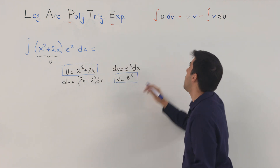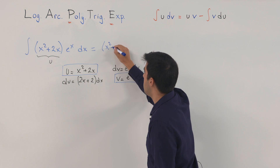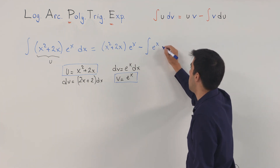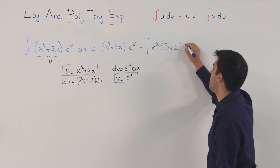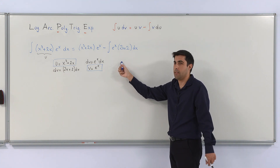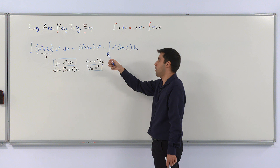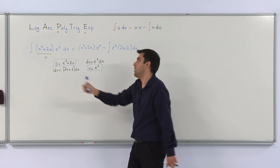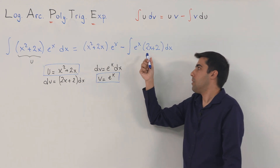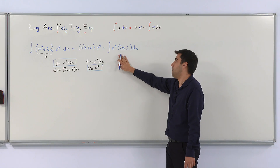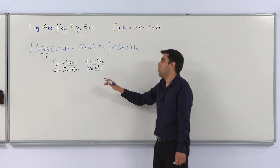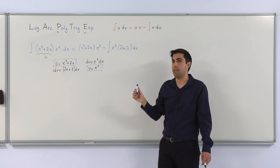By applying integration by parts, we have u times v, which is (x squared plus 2x) times e to the x, minus the integral of e to the x times (2x plus 2) dx. The second integral still has a product in it. Notice however that the polynomial is now of first degree rather than second degree. So applying integration by parts one more time will give a polynomial of degree zero. In some questions, you need to reapply integration by parts as many times as necessary.